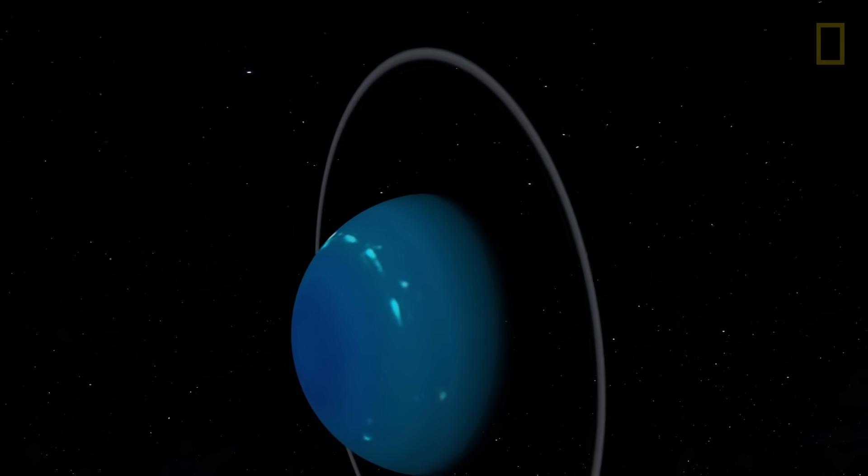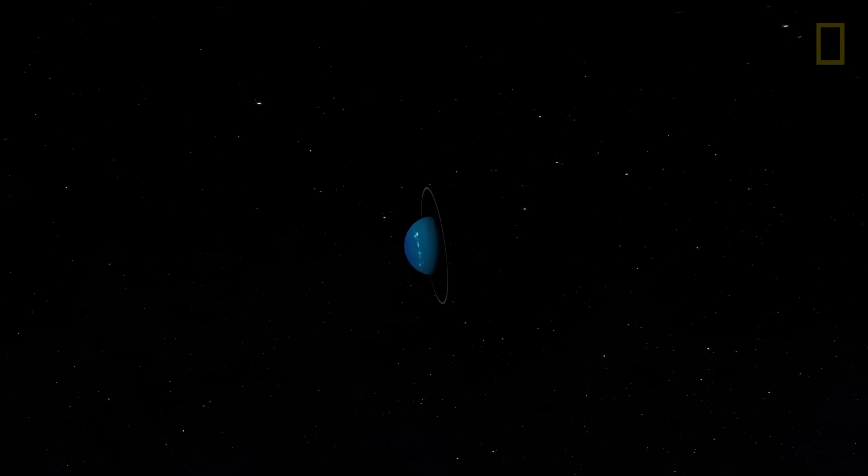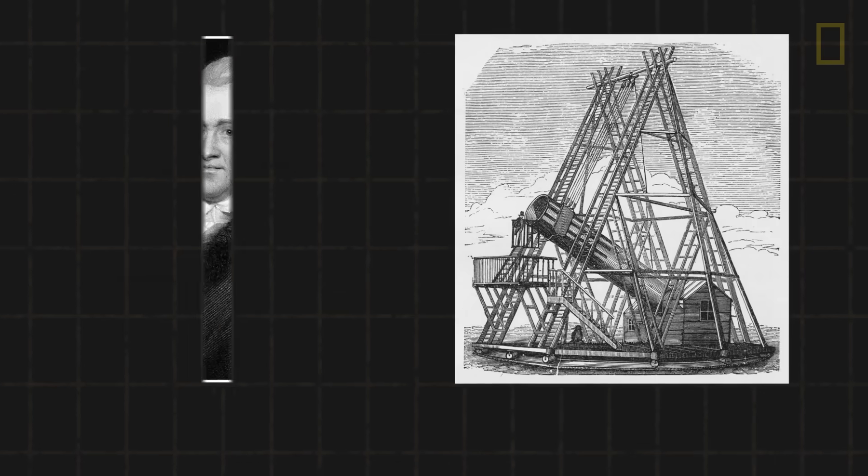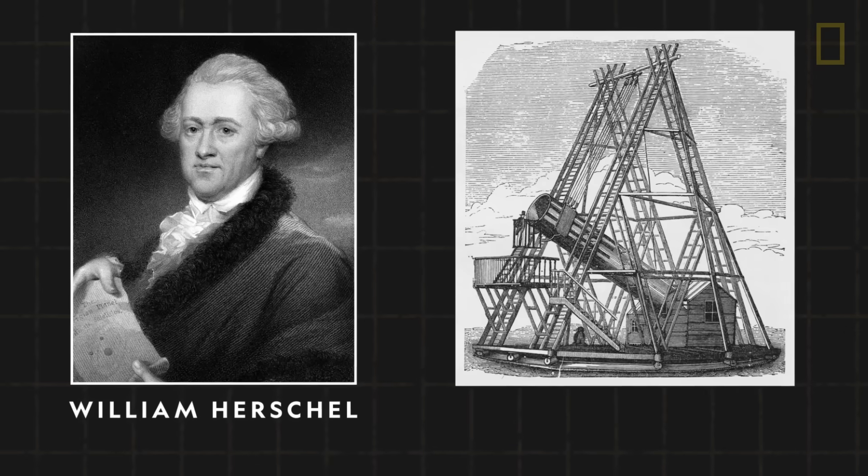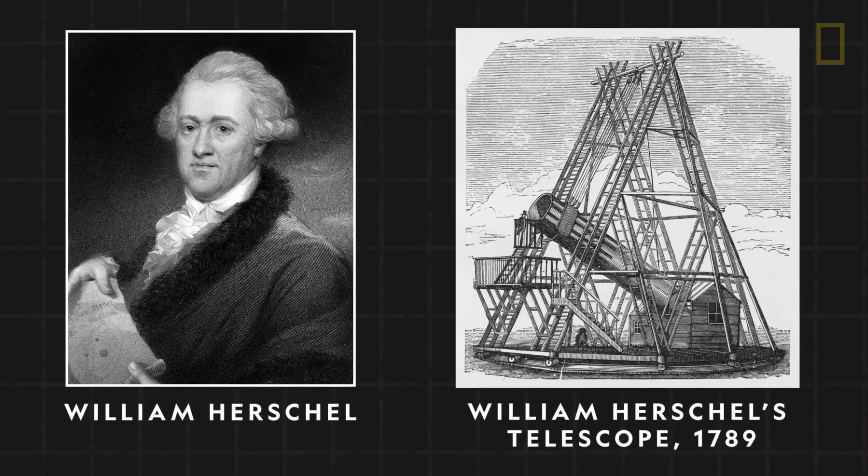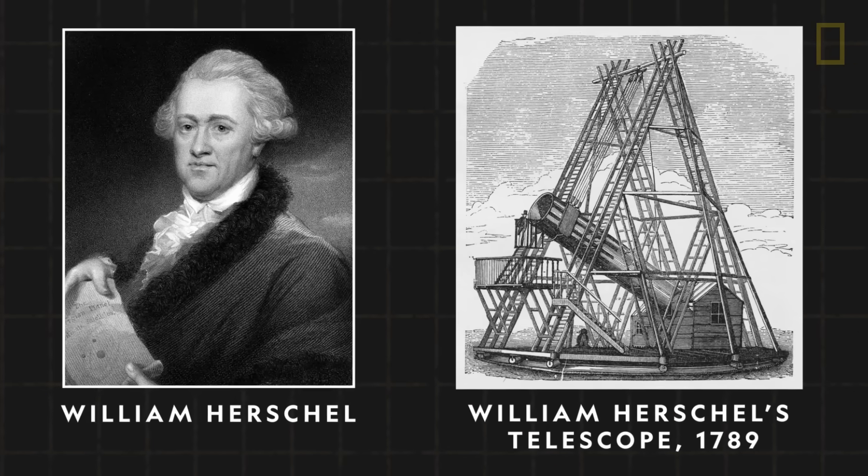Uranus and its many unusual features were a mystery to the ancients, and the planet was actually thought to be a star. But in the late 18th century, astronomer William Herschel discovered that the celestial object was actually a new world.